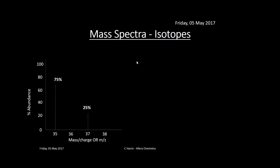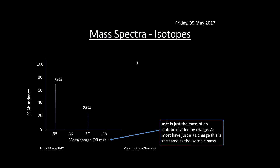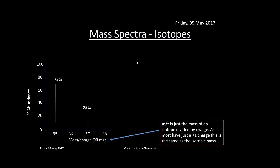Let's look at a mass spectrum. Here we have an element made up of isotopes. The x-axis shows the mass-to-charge ratio — the mass of the isotope divided by the charge. Most ions have a plus one charge, making it the same as the isotopic mass. If two electrons were knocked off, the m/z would be half the mass. The y-axis shows abundance — read it carefully, as it can be percentage abundance or relative abundance. This one shows percentage abundance, so all isotopes must add to 100%.